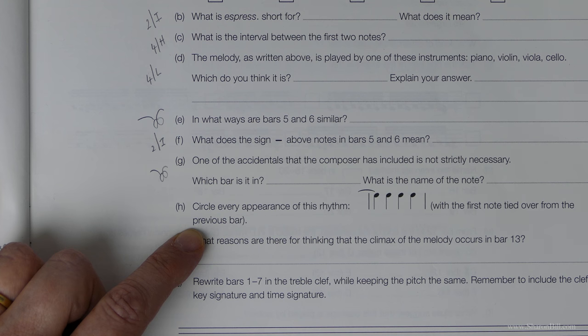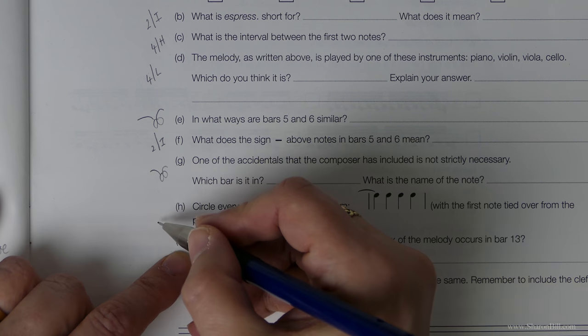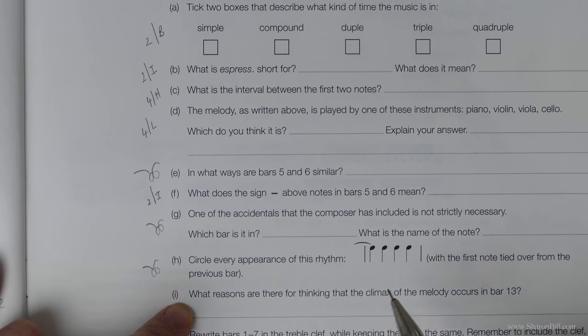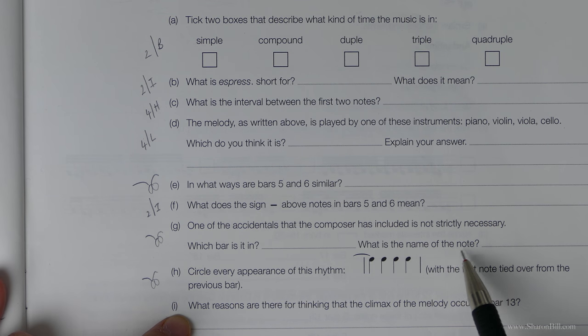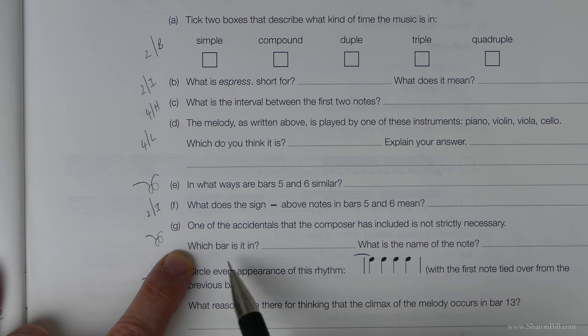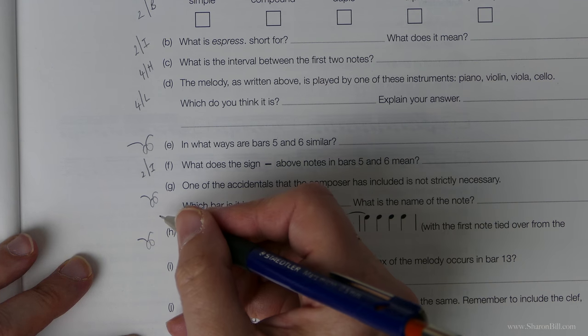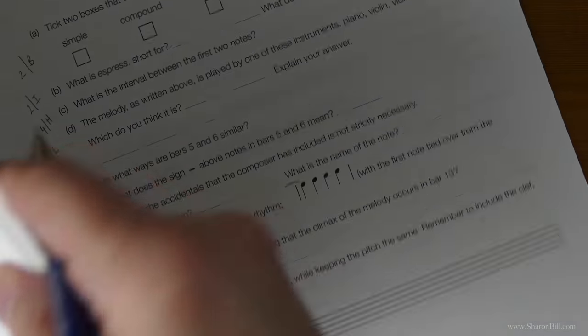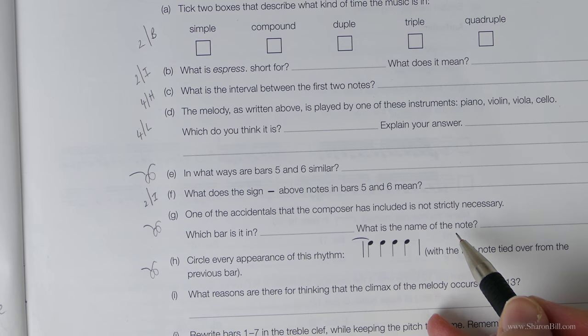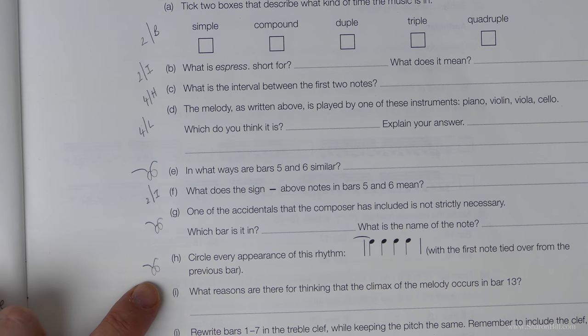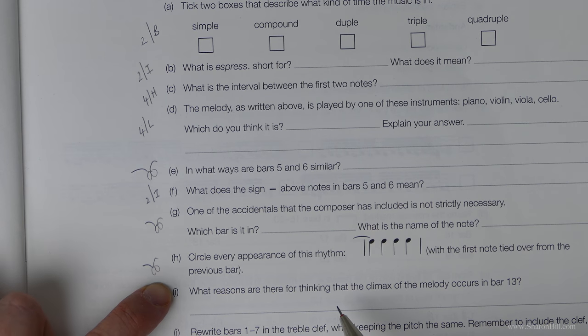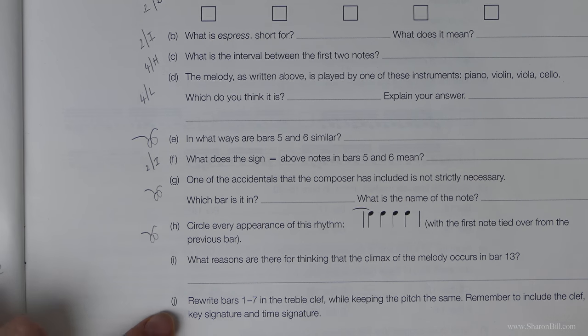Circle every appearance of this rhythm. Actually I've just noticed we need to name the note here, so let me just help you find that. In the alto clef, you'll find that answer - I think it's section B. Let me just check that.